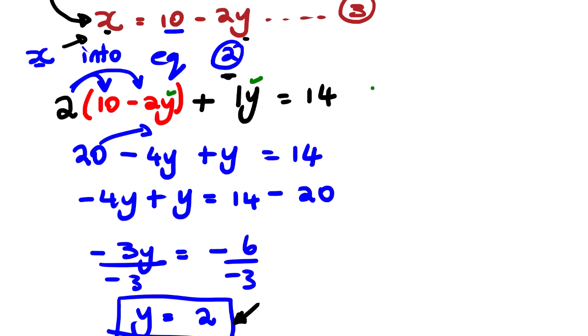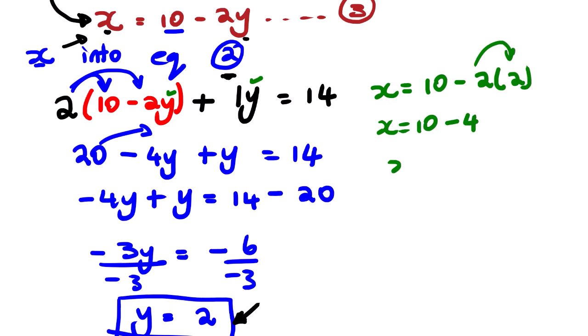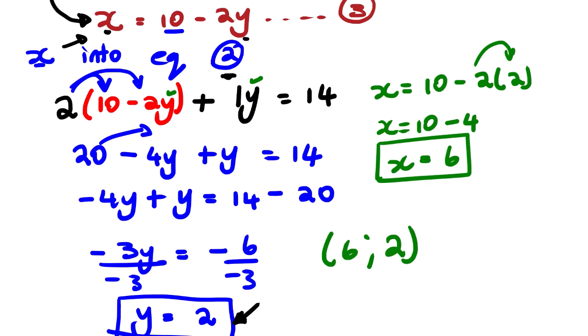Where we see y in equation number three, we substitute by 2. So x equals 10 minus 2 times 2. Negative 2 multiplied by positive 2 gives negative 4, so x equals 10 minus 4, which is x equals 6.